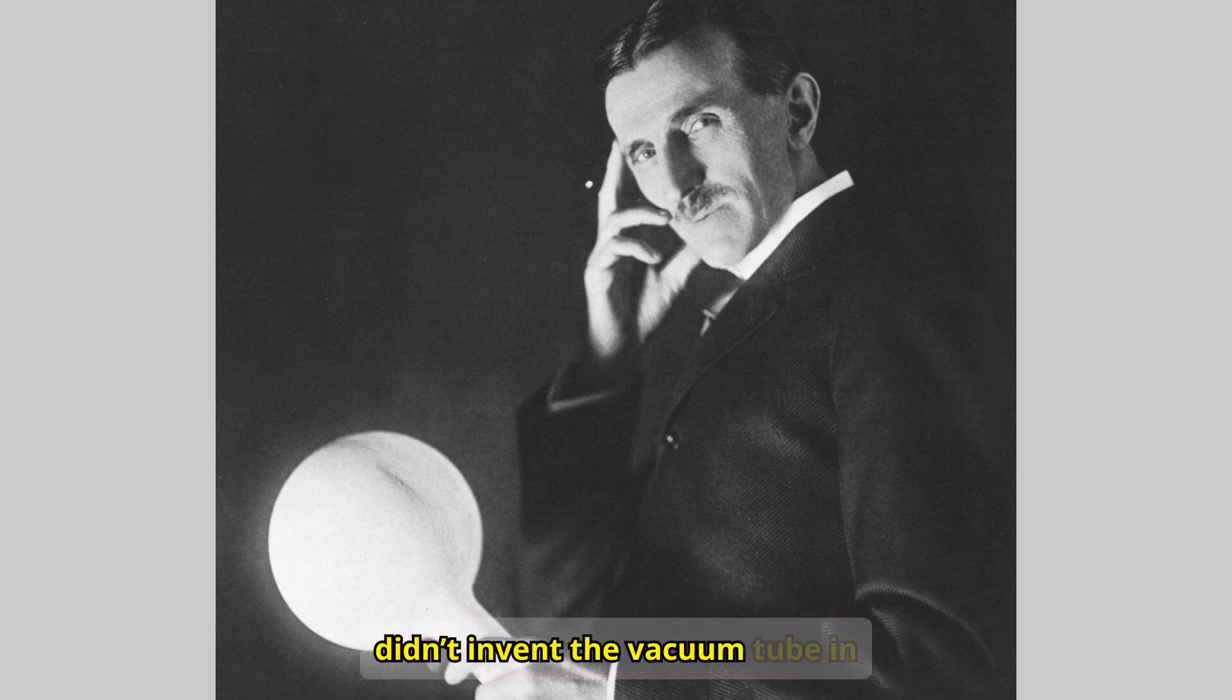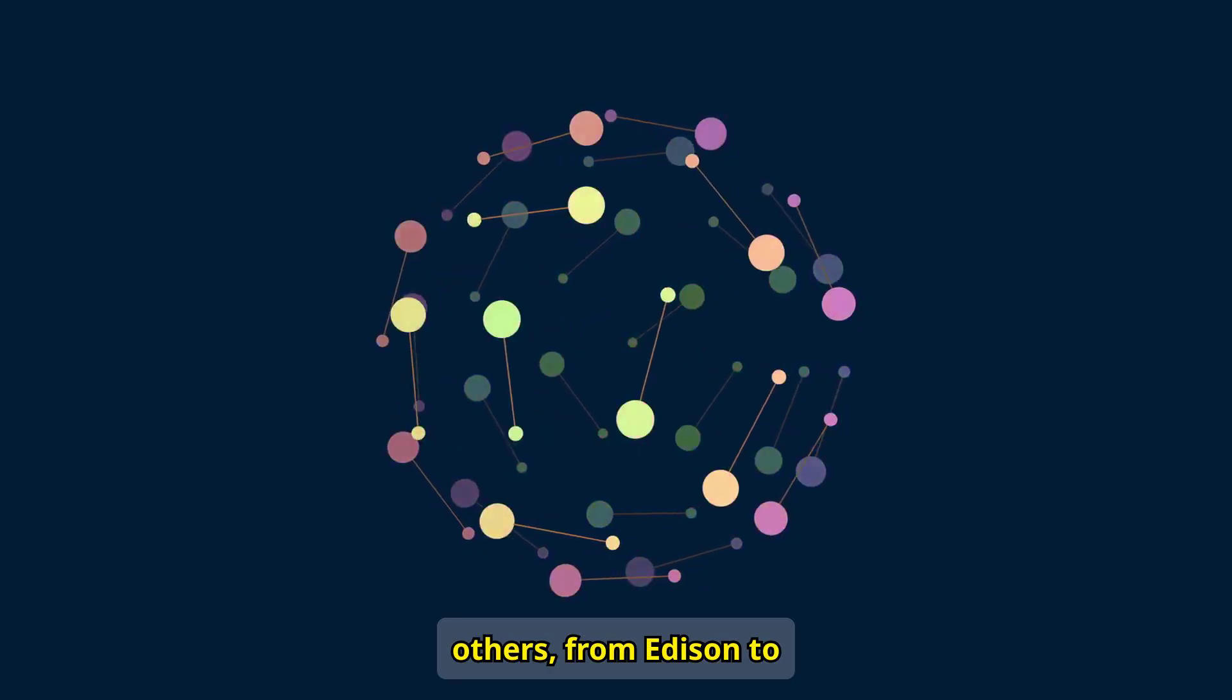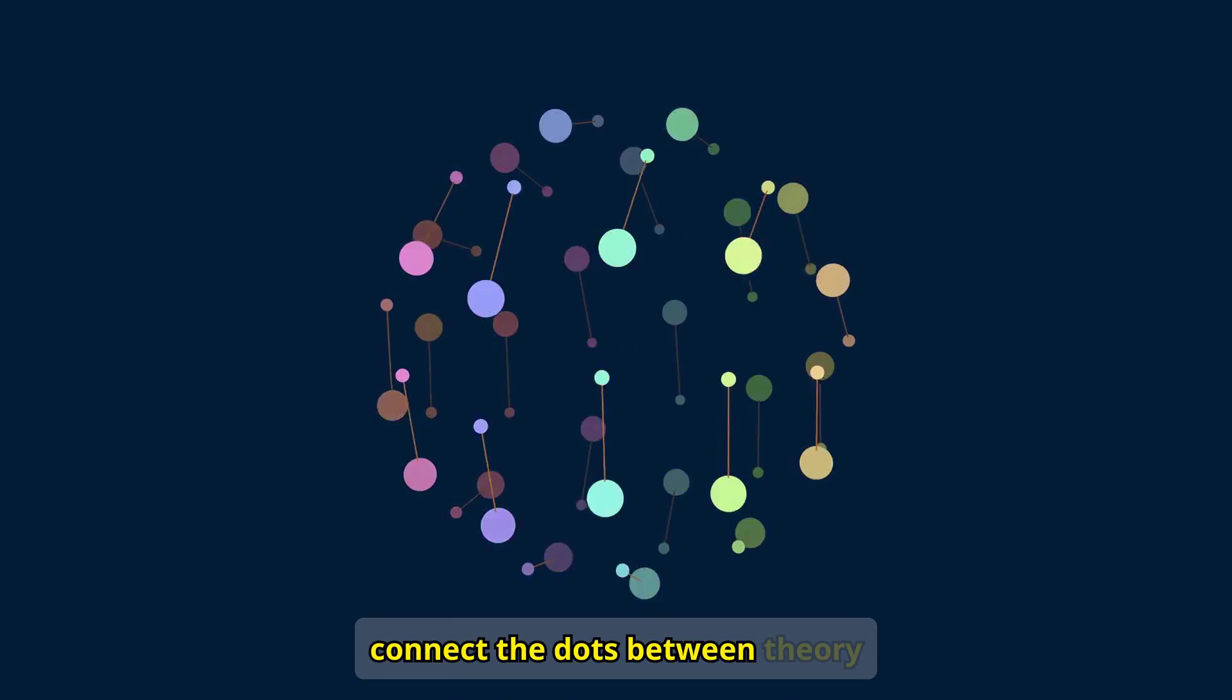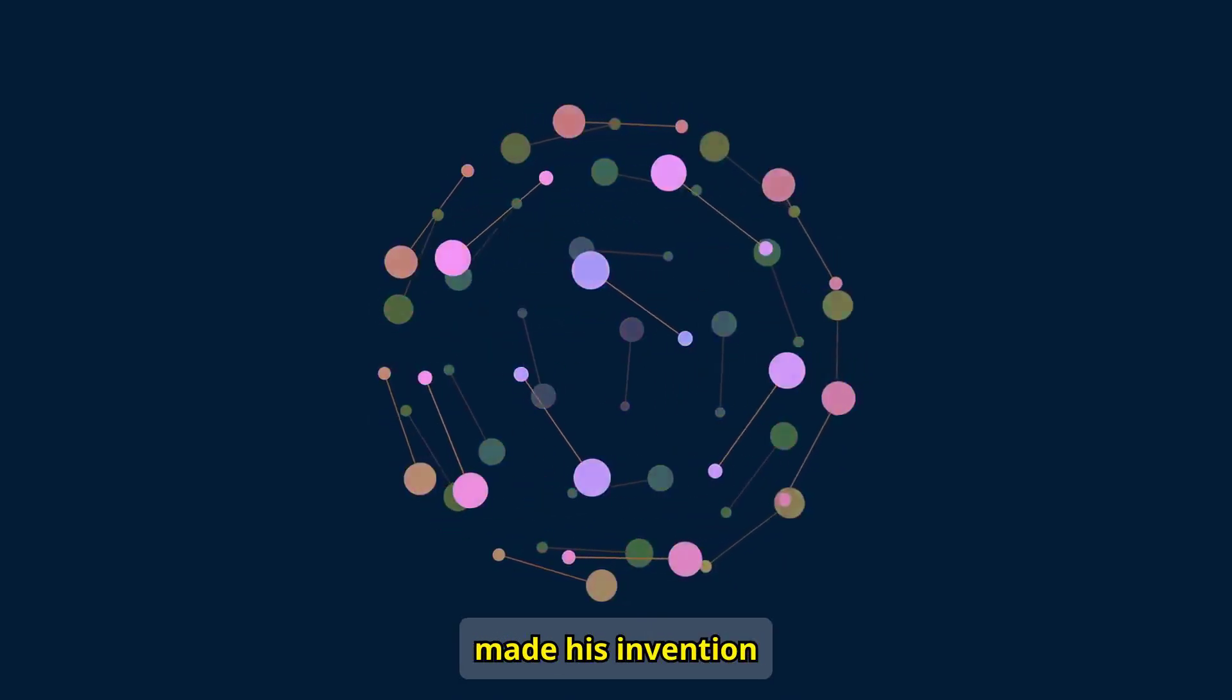Fleming didn't invent the vacuum tube in isolation. His work built on the discoveries of others, from Edison to Faraday. Yet it was his ability to see the bigger picture, to connect the dots between theory and application, that made his invention possible.